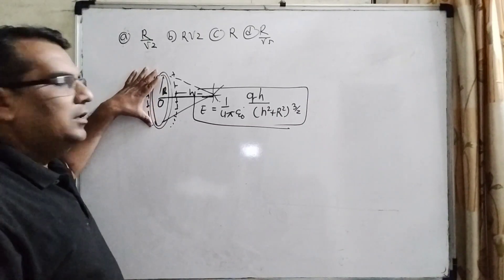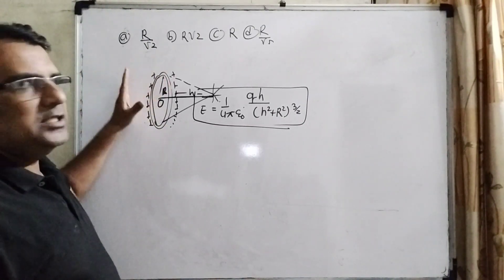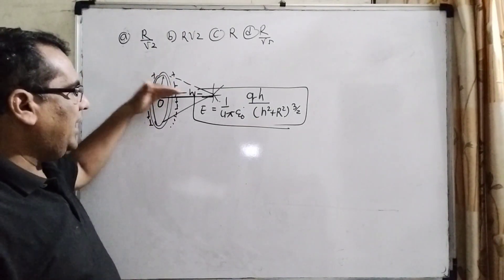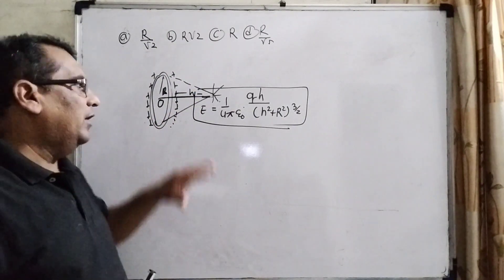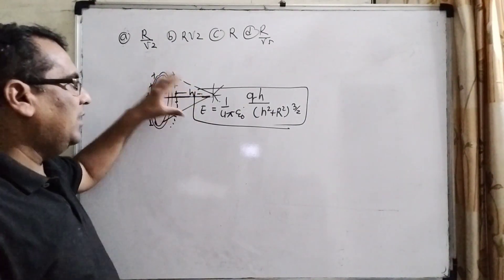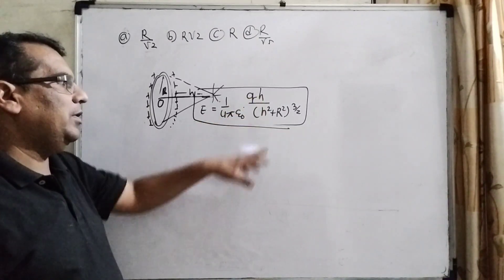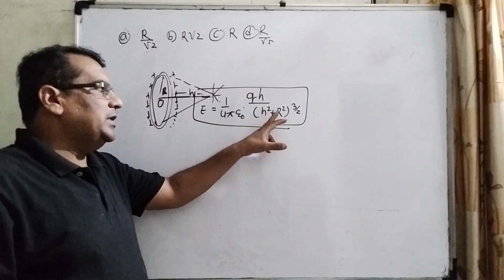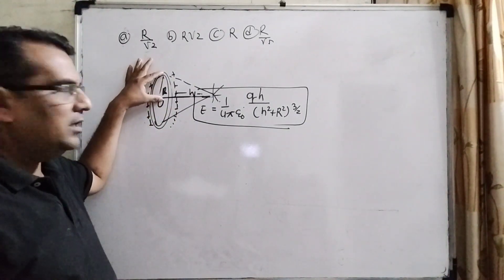Let's see what the question says. Here, you have given a charged ring and need to find out the maximum electric field at the axis. As we know, the formula of the electric field at the axis of the charged ring equals 1 over 4π epsilon_0 times qh over (h² + R²) raised to power 3/2. Here capital R is the radius of this ring.